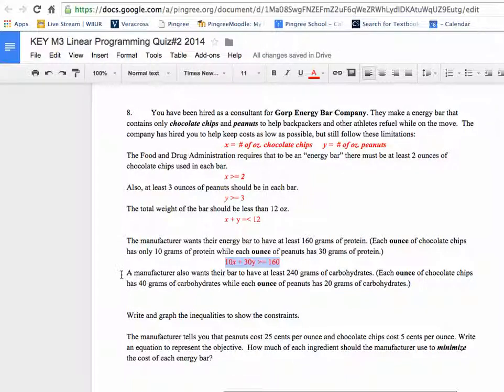Similar kind of thing for the energy bar and the carbohydrates. Less than, sorry, have at least 240 grams. Oh, and at least 160. Not less than, more than. So I misread that, but caught that mistake. The energy bar has to have at least 240, and they give you the breakdown there. And there are 40 grams of carbohydrates in every chocolate chip, ounce of chocolate chips, and 20 for every ounce of peanuts. So that constraint is written like this. 40 for x and 20 times y is got to be greater than or equal to 240.